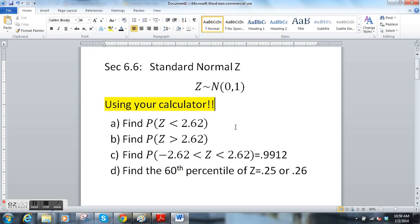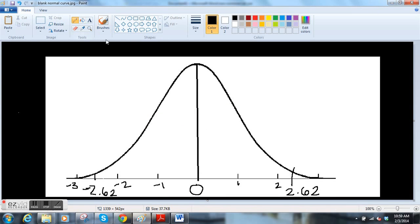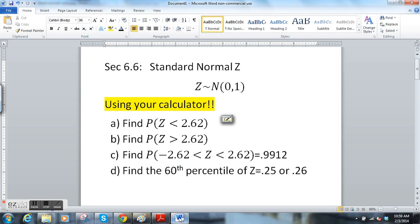The first one says find the probability that Z is less than 2.62. So if we look at our picture, here's my Z curve. We want the probability that Z is less than 2.62. I'm including the picture to give you a sense of what you're doing, this area, including everything down to infinity, less than 2.62. We want to know what is this area? I'm guessing it's bigger than 0.5.